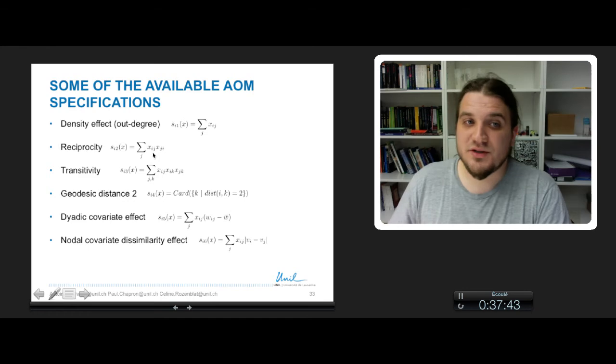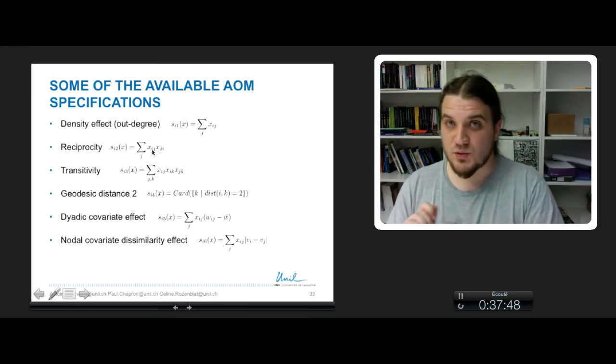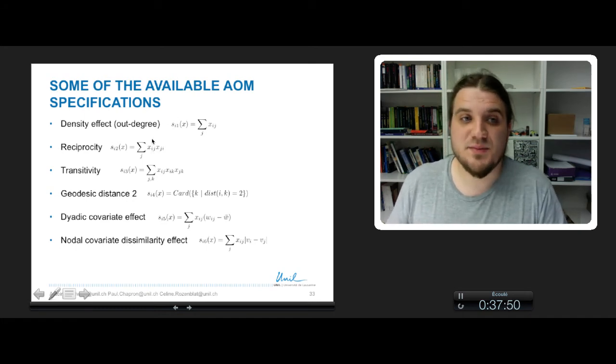Reciprocity is a product between xij and xji, so this is positive only when there are reciprocal ties. If it misses a link, the value is zero.